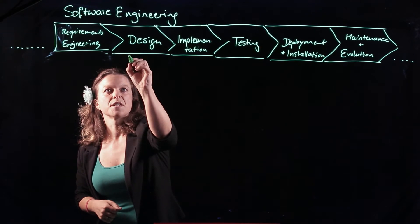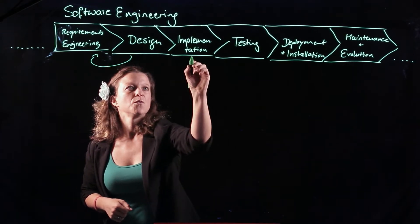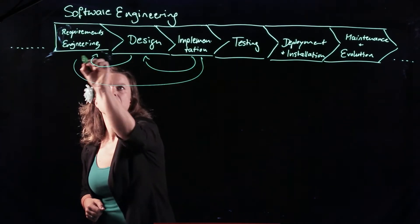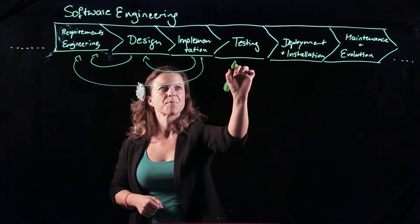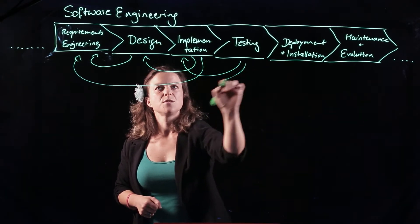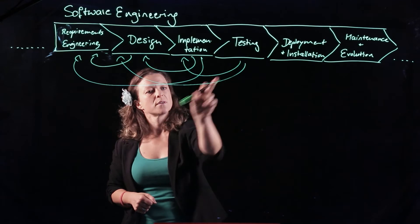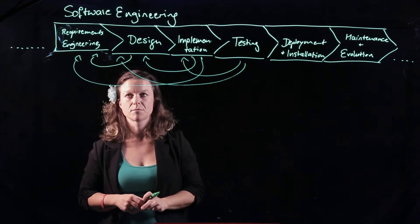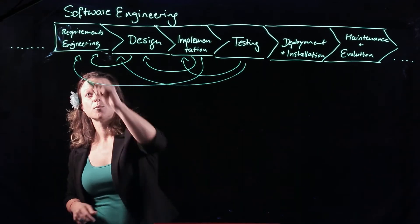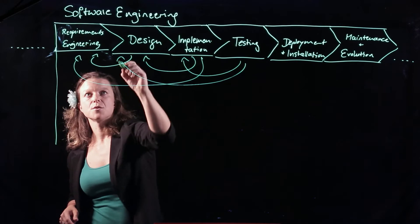So that's the next simplification. There are actually feedback loops here that go back. But this you may already have heard of in earlier software engineering courses. In our course, we focus on requirements engineering.